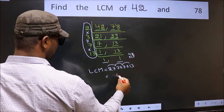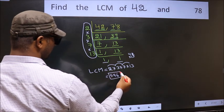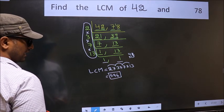13 to 26, 6, 2. 13, 4 is 52 plus 2, 54. So 546 is our LCM.